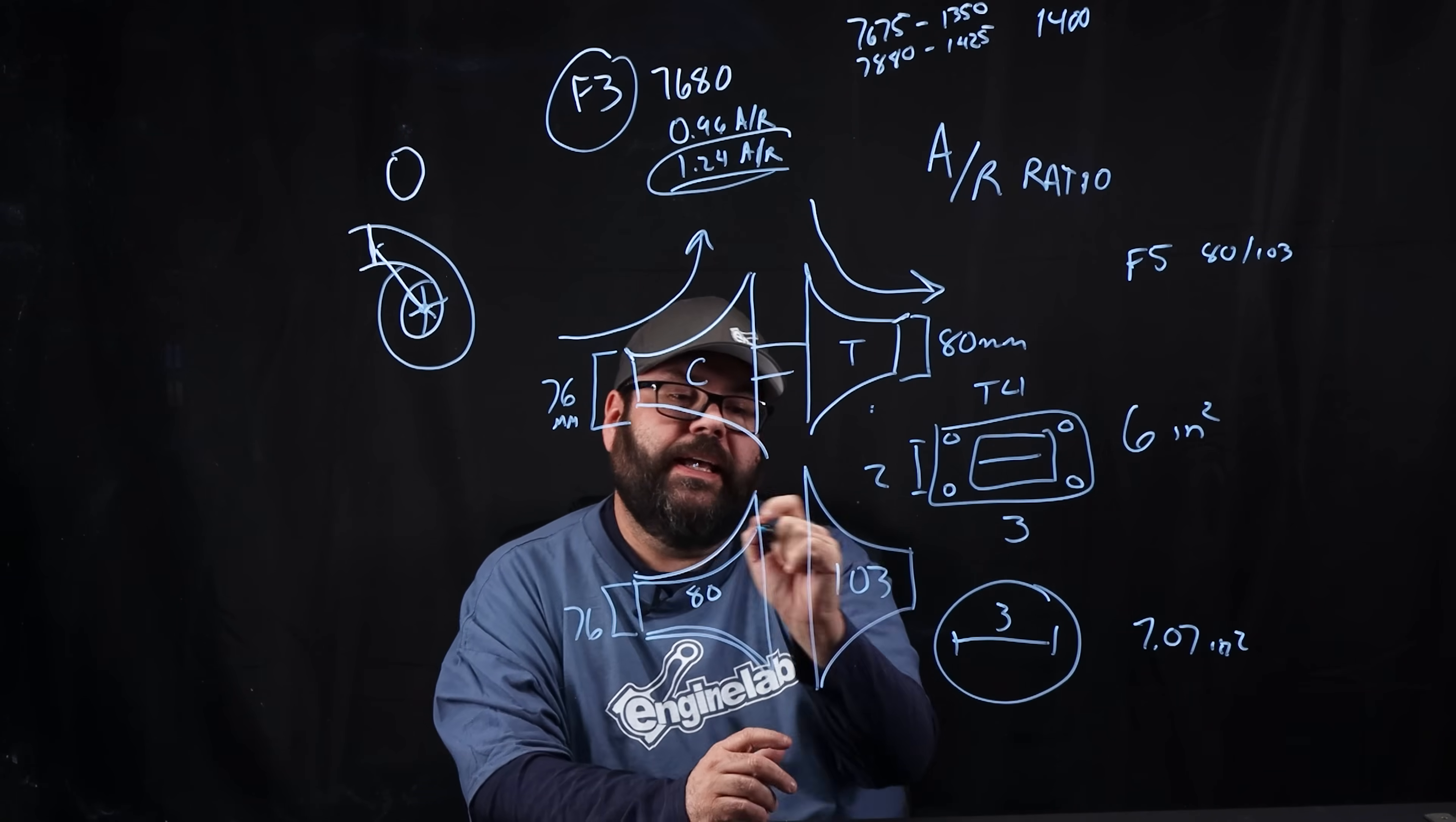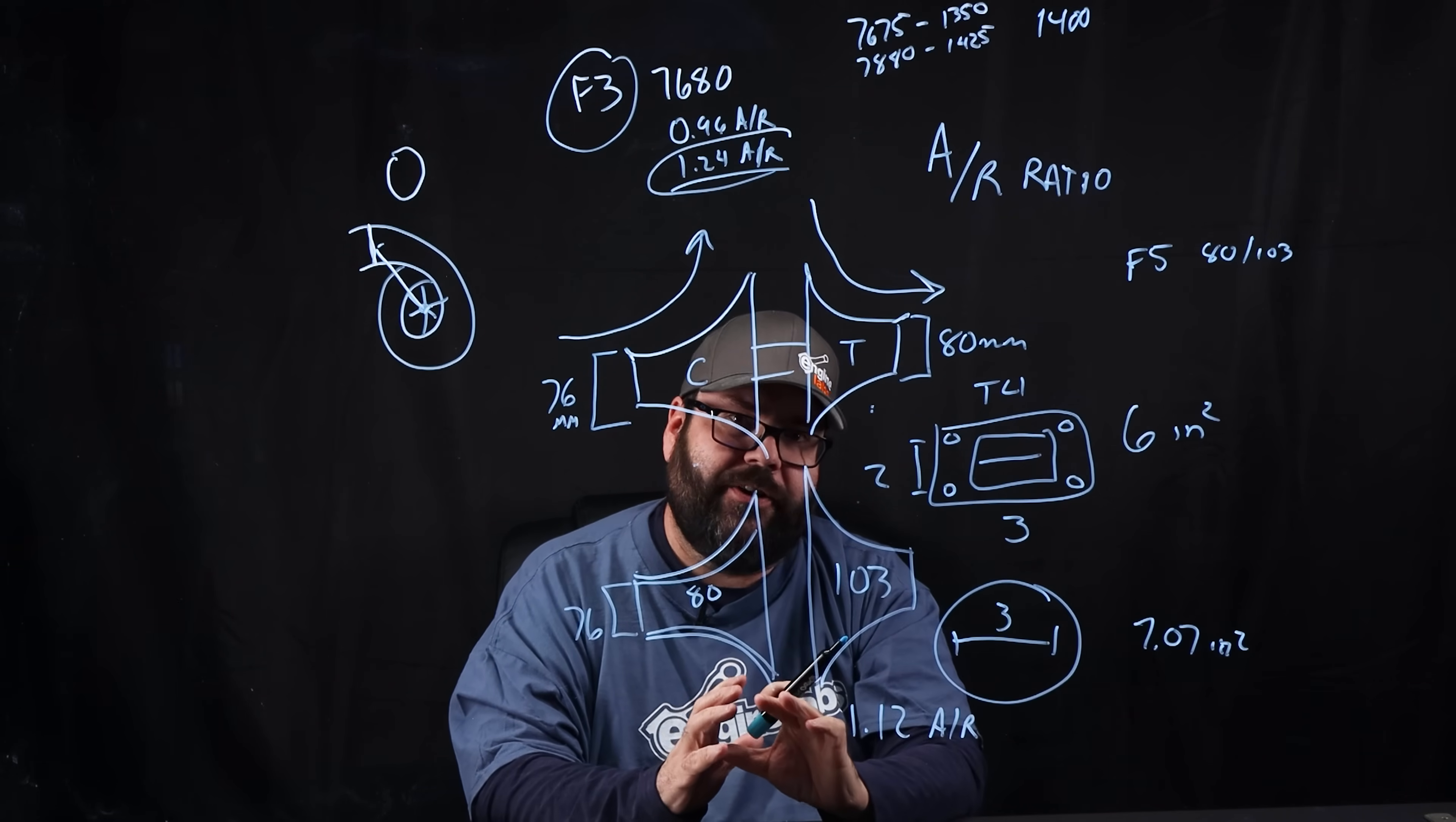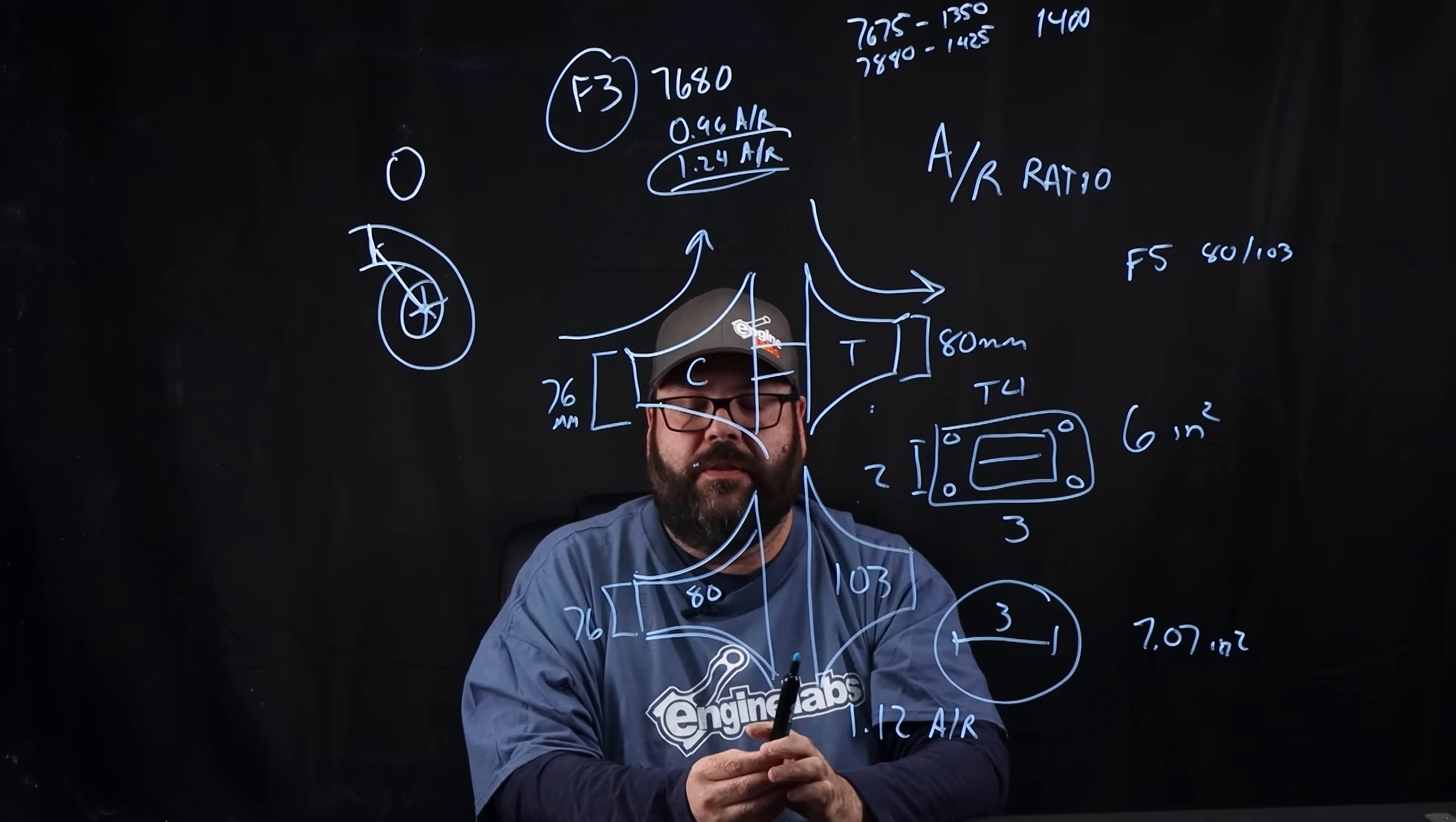One thing to note here is the much larger exhaust housing will be limited, not limited, but we're choosing the 1.12 AR ratio. Now, you might look at that number and go, well, if it's a 1.12 and you were choking out the 1.24 over here, you're going to a smaller one, you're going to choke it out. Well, AR ratios are only accurate when you're comparing similar housings. The 103 T6 housing is massively larger than the T4 80 millimeter housing. So that 1.12 AR is still going to flow more than the 1.24 in the midframe.